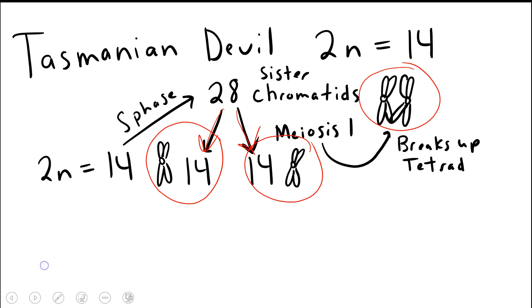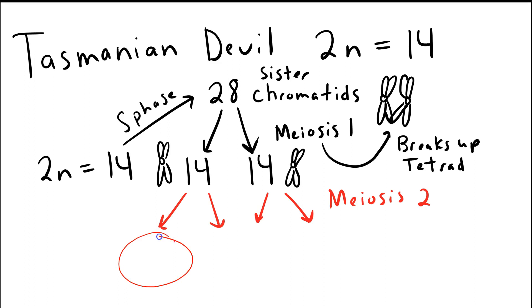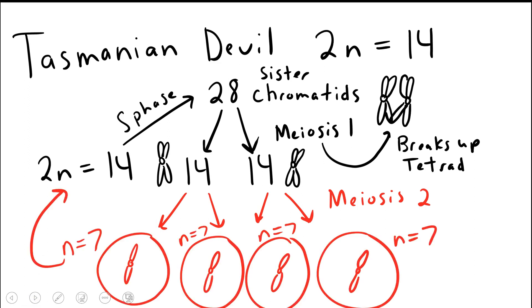Meiosis II then separates the sister chromatids. So we're going to now have four daughter cells from that division in meiosis II. The result is seven chromosomes being put into each gamete. So each gamete will have an N of seven, meaning they'll have seven chromosomes in that individual haploid gamete.